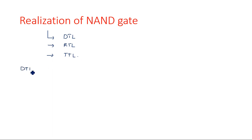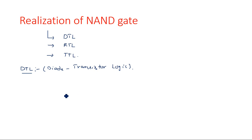Let us start the first one, DTL. DTL stands for diode transistor logic. That means the NAND operation can be implemented with the combination of diodes and transistors. The AND realization is extended with a transistor because the transistor gives 180 degrees complement. The AND output is passed through a NOT gate, which then gives you the NAND operation.